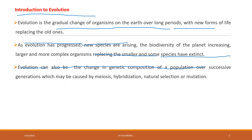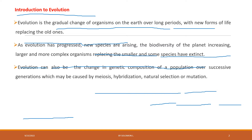Evolution can also be understood as changes in the genetic composition of a population — not only replacing old forms with new ones, but a change in genetic composition. This may occur because of meiosis, which is a type of cell division, hybridization, natural selection, or mutation. This results in the formation of new species from an already existing population.